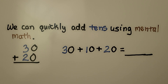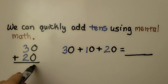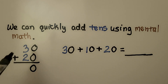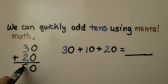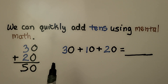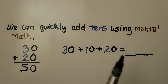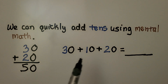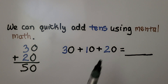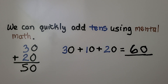We have learned that we can quickly add tens using mental math. We have no ones, so that's zero. And we have three tens plus two tens — that's five tens, that's fifty. We can add it as a number sentence. We don't have any ones, so we just count the tens: three, four, five, six. We have six tens, zero ones — that's sixty.